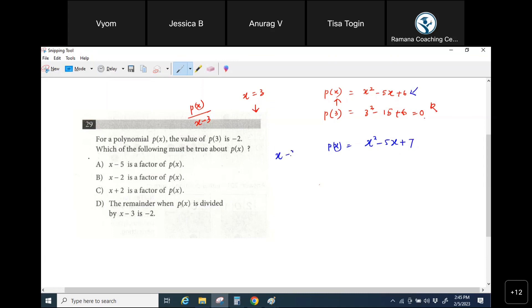with x minus 3, which means if I substitute x equal to 3, what do I get? 9 minus 15 plus 7, I'll get 1, don't you get 1 as a remainder? So exactly, what does that mean when you divide the polynomial p of x with x minus 3? The remainder is 1, that's what...